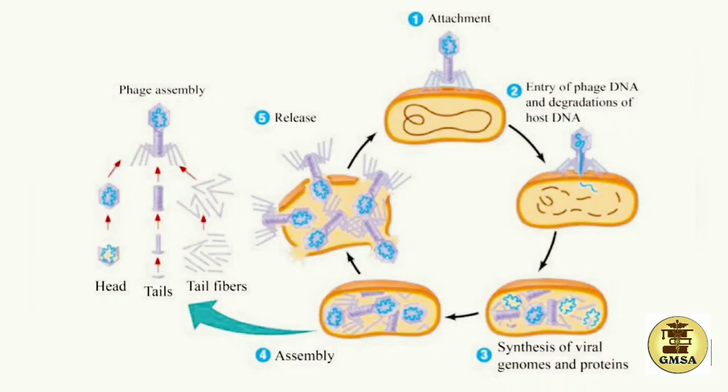In the final step — release — the bacteriophage induces the bacterial cell wall to break open completely, and newly formed bacteriophage viruses are released from the host cell. These released bacteriophages can then start another lytic cycle in nearby cells. A single cell giving rise to thousands of viruses which then affect thousands more host cells means the infection multiplies rapidly and the host is badly affected.